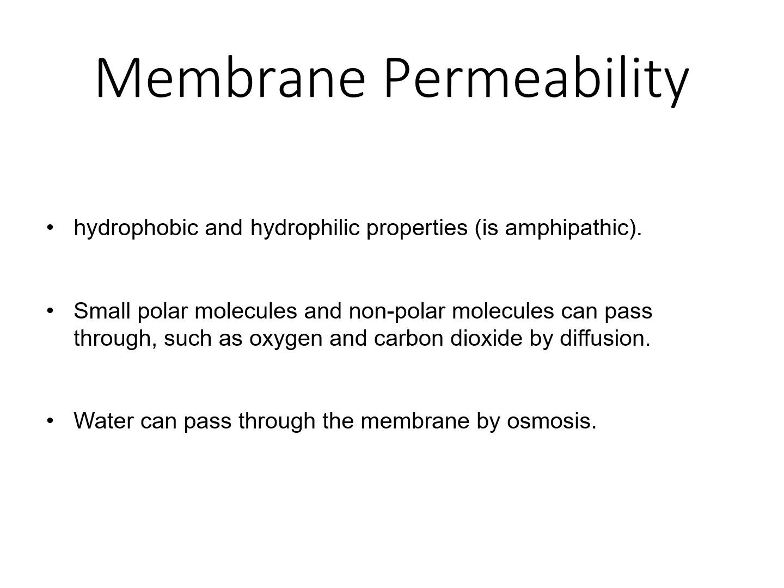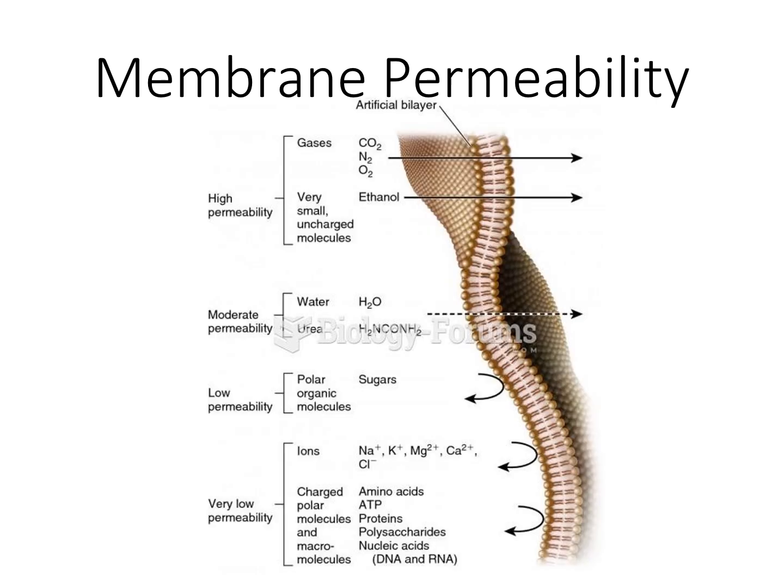The cell membrane has the ability to allow small polar molecules and non-polar molecules to pass through, such as oxygen and carbon dioxide, via a process known as diffusion — from an area of high concentration to an area of low concentration. Water can pass through the membrane via osmosis. As you can see in this diagram, high permeability gases such as carbon dioxide, nitrogen, oxygen, and very small uncharged molecules have high permeability.